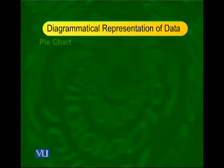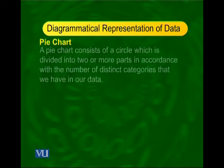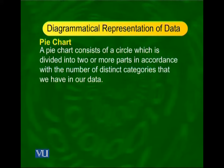Let us now see how we can represent this data in the form of a diagram. One of the very interesting and effective ways of representing this kind of data diagrammatically is to draw a pie chart. A pie chart consists of a circle which is divided into two or more parts in accordance with the number of categories that we have in our data.